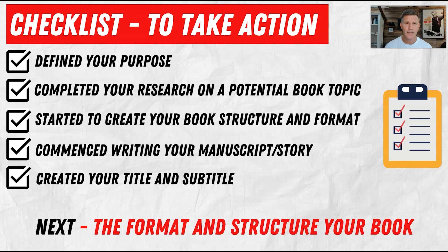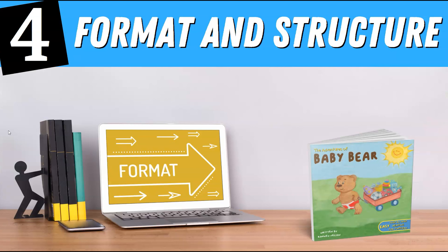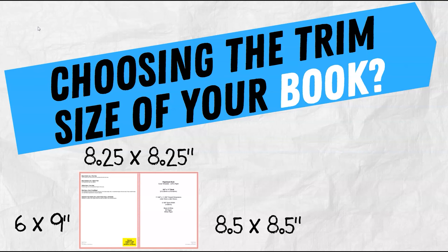Step four is format and structure. This is the point where you need to consider what kind of book you're going to create — a hardback, a paperback, an ebook, or maybe a combination of all three. You also need to think about how your illustrations will fit into the structure of your book, and this is when you should think about the size of your book as well.